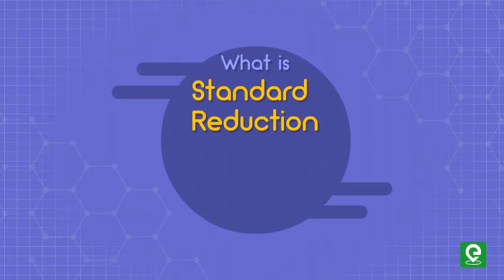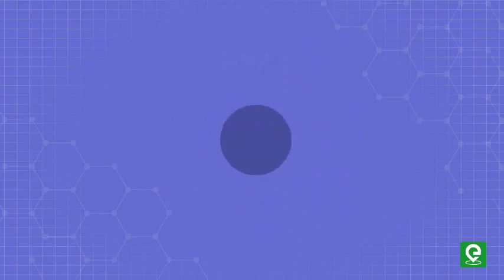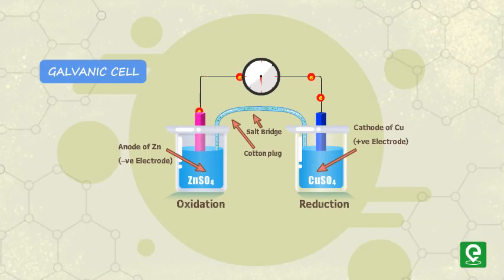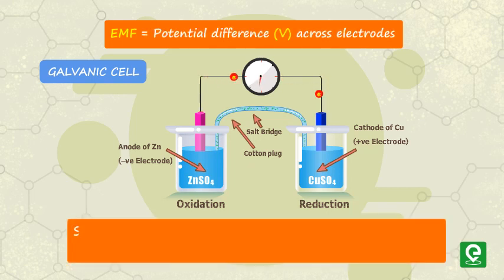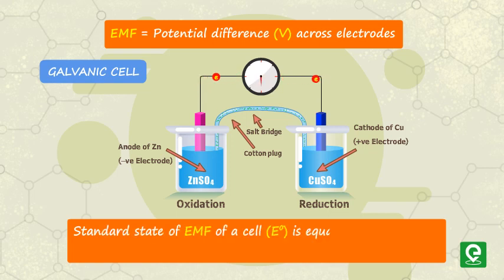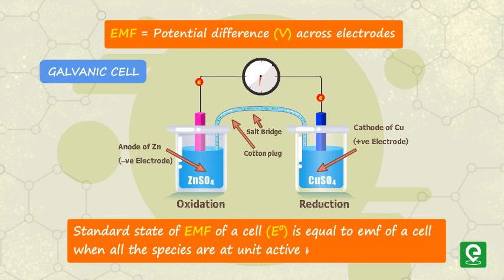What is standard reduction potential? In an electrochemical cell, the electromotive force (EMF) is the potential difference across the electrodes. The standard state of EMF of a cell, E°, is equal to the EMF of a cell when all the participating species are at unit active masses.